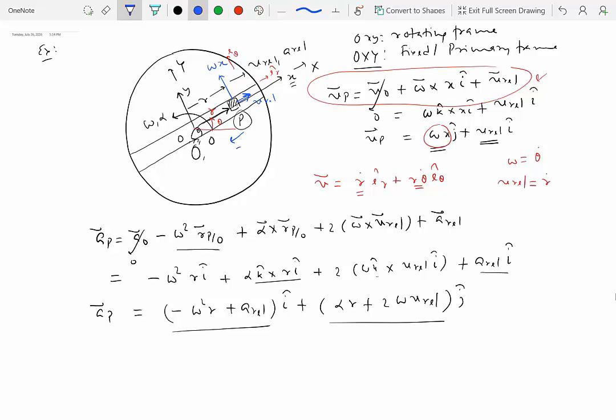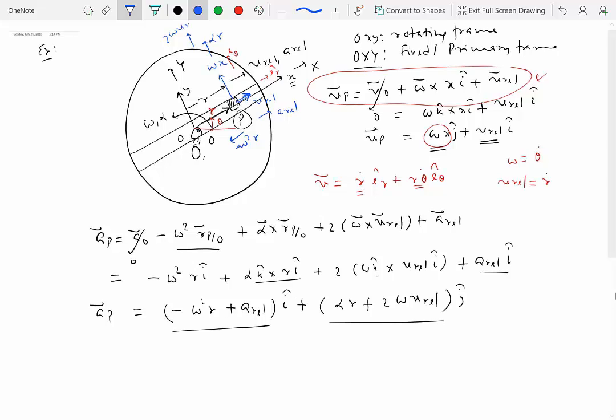So along i direction what are the terms? We have minus omega square R so omega square R is pointing this way, that's towards the center which we have also seen as normal direction acceleration. We have A relative that's pointing in the direction of sliding. Alpha R is pointing that way and then 2 omega V relative is also pointing that way.